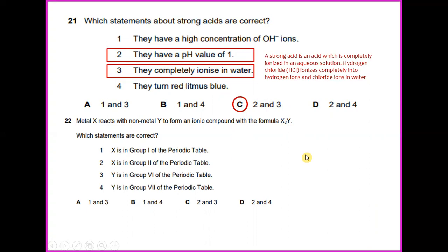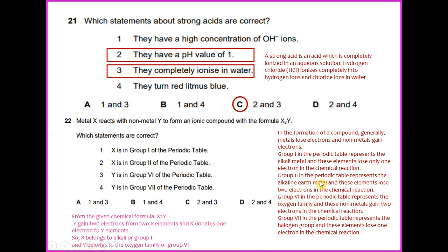Metal X reacts with non-metal Y to form an ionic compound with the formula X2Y. Group 1 in the periodic table represents the alkali metal and this element loses only one electron in the chemical reaction. Group 2 in the periodic table represents the alkaline earth metal and this element loses 2 electrons in the chemical reaction. Group 6 in the periodic table represents the oxygen family and these non-metals gain 2 electrons in the chemical reaction.